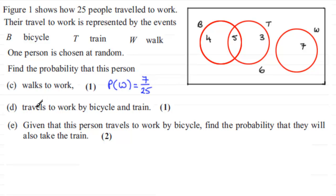Now in part D we've got to find the probability that this person travels to work by bicycle and train. Well by bicycle and train, that's this part here, the overlap between B and T. So 5 people, 5 people out of 25. So when we want to talk about the intersection here, we use the symbol, this upside down U, B intersected with T. And that then is going to be 5 out of 25, and that cancels down to 1 fifth.